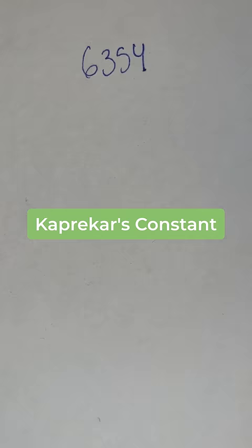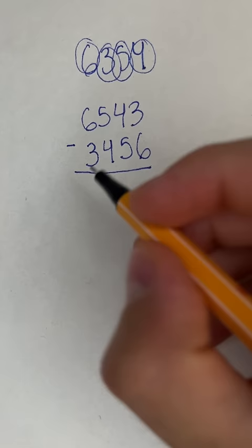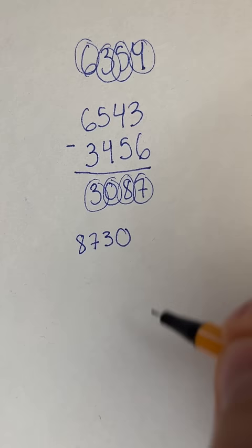Let's go ahead and repeat that. I arrange them in descending order, then ascending order, I subtract them, and I get 3087. We continue doing that, and we will eventually get to the same number every single time, which is 6174.